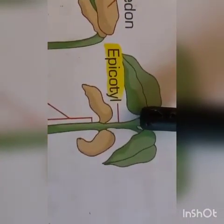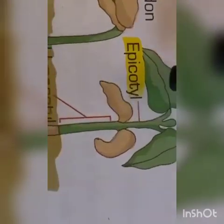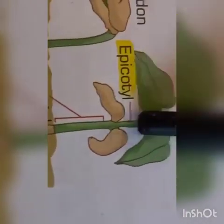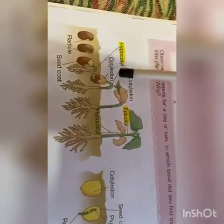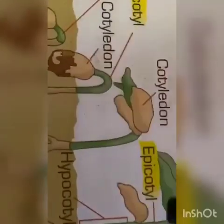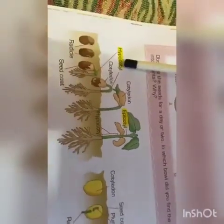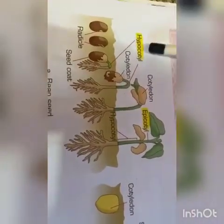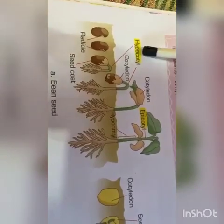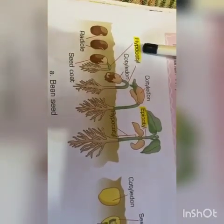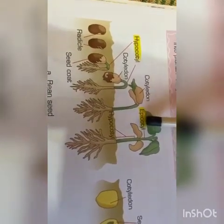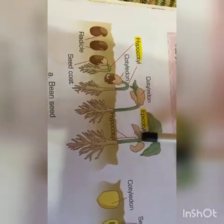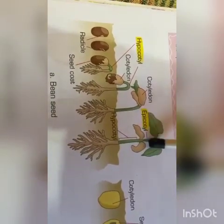The portion of the embryo or seedling above the cotyledons is called epicotyl. So there are two terms: hypocotyl and epicotyl. Hypo means below, so the portion below the cotyledons is called hypocotyl; epi means above, so the portion above the cotyledons is called epicotyl.